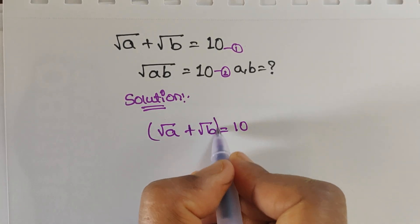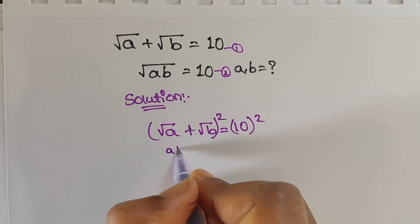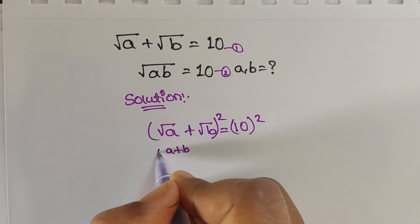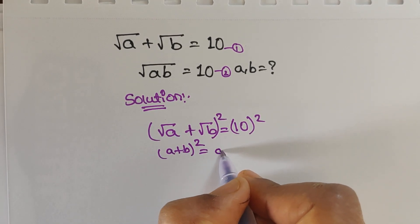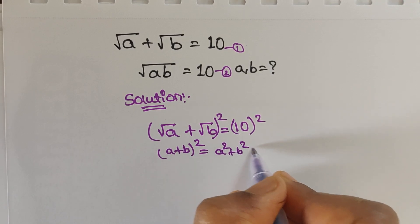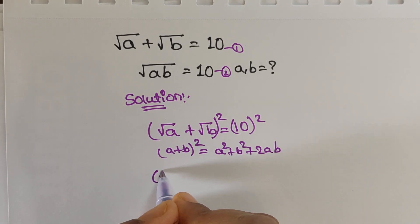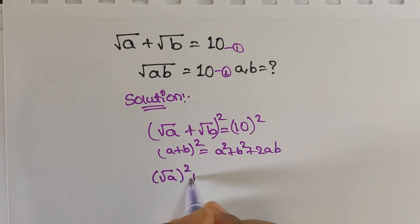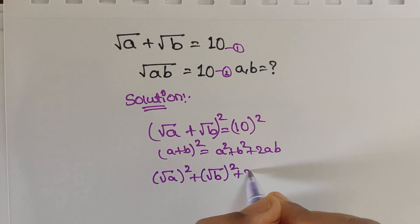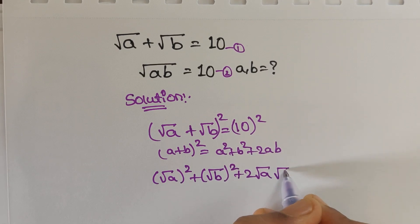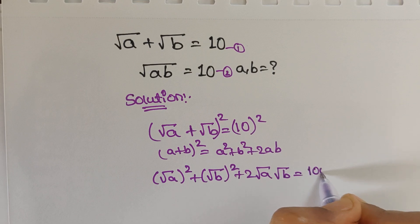Apply squares on both sides. This is in the form of (a + b) whole square. We know the formula: a plus b whole square equals a square plus b square plus 2ab. Using this formula, we write: square root of a whole square plus square root of b whole square plus 2ab equals 10 squared, which is 100.